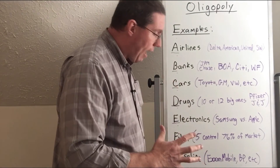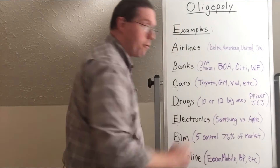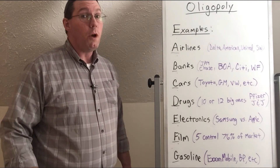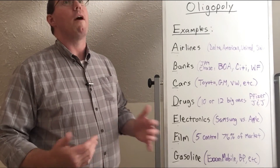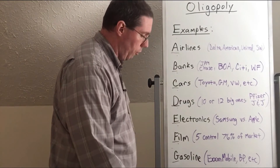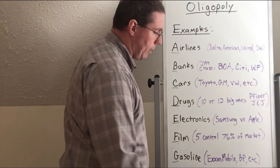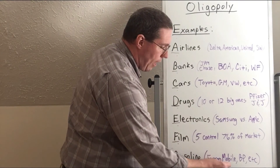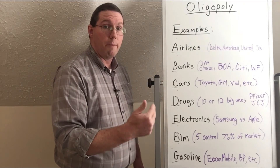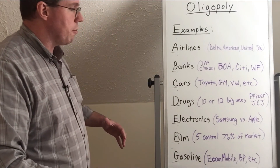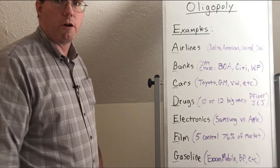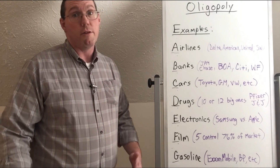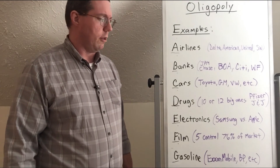There's the film industry: five motion picture companies control 76% of the market, and Disney controls about 33% of the motion picture industry — one-third of all movie revenue in the United States or the world. There's also the gasoline industry: the biggest ones are ExxonMobil, BP, Shell, and Chevron. Exxon and Mobil actually used to be two separate companies but merged to become ExxonMobil. These are all companies you've heard of. There are also oligopoly markets you may never have heard of — for example, the steel industry, with companies like Nucor Steel.